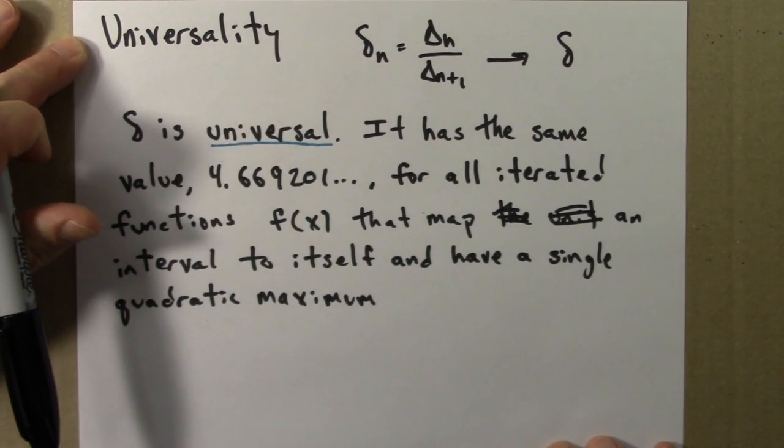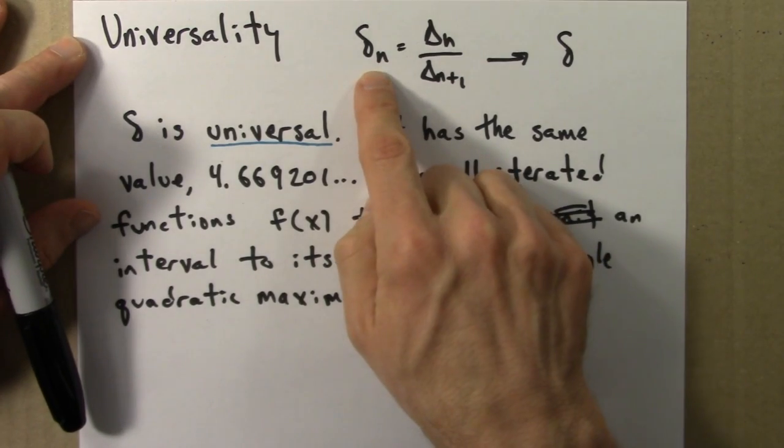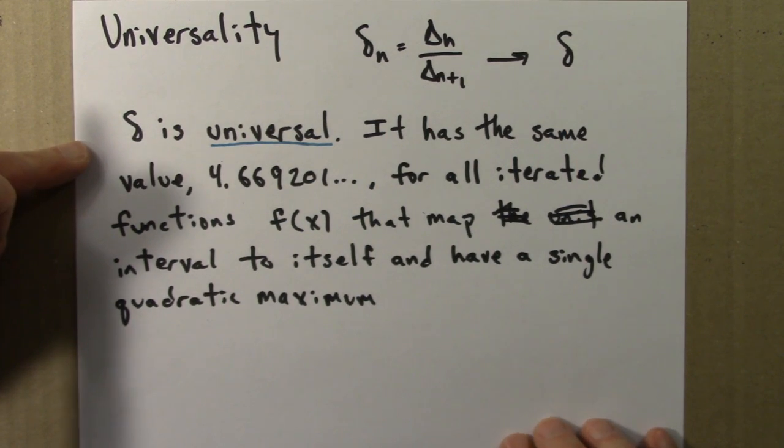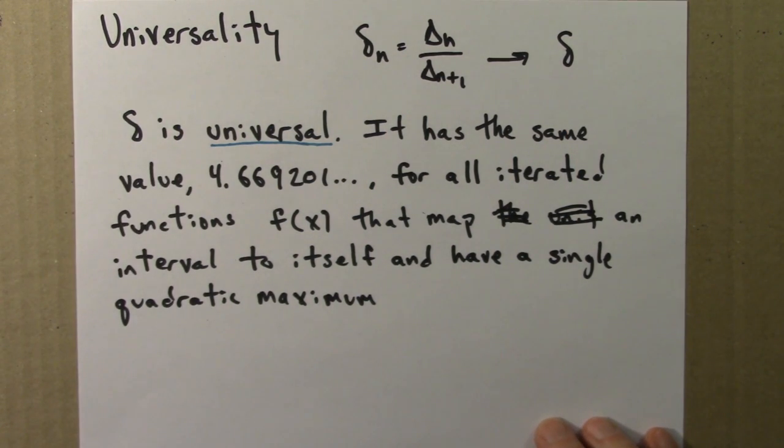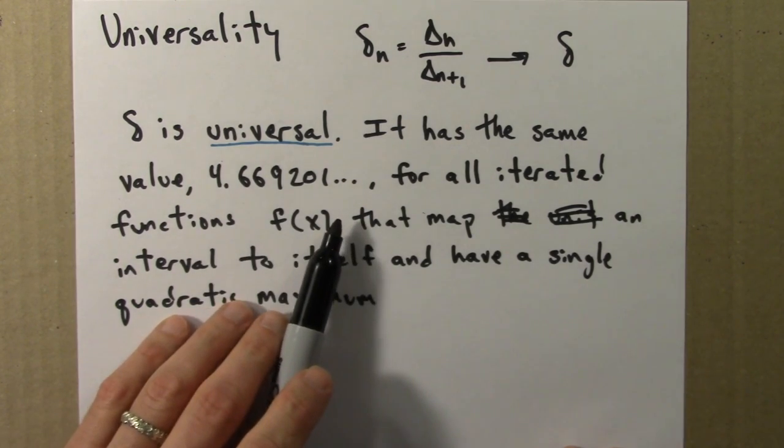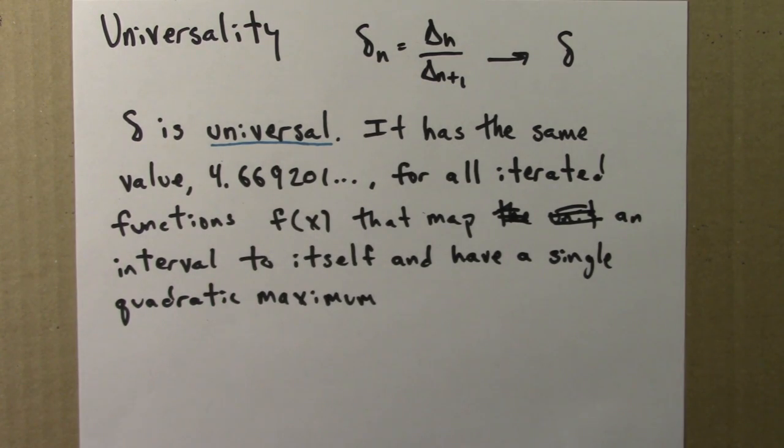So again, the phenomenon of universality, with delta n approaching a number delta, and we say that delta is universal. And the result is that this number delta is the same, 4.669201, for all iterated functions that map an interval to itself and have a single quadratic maximum.